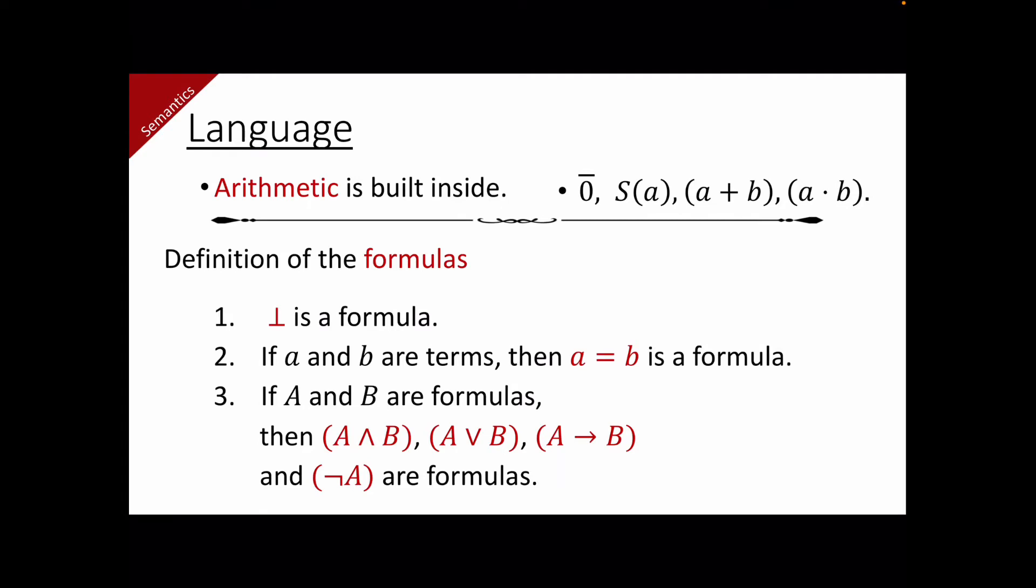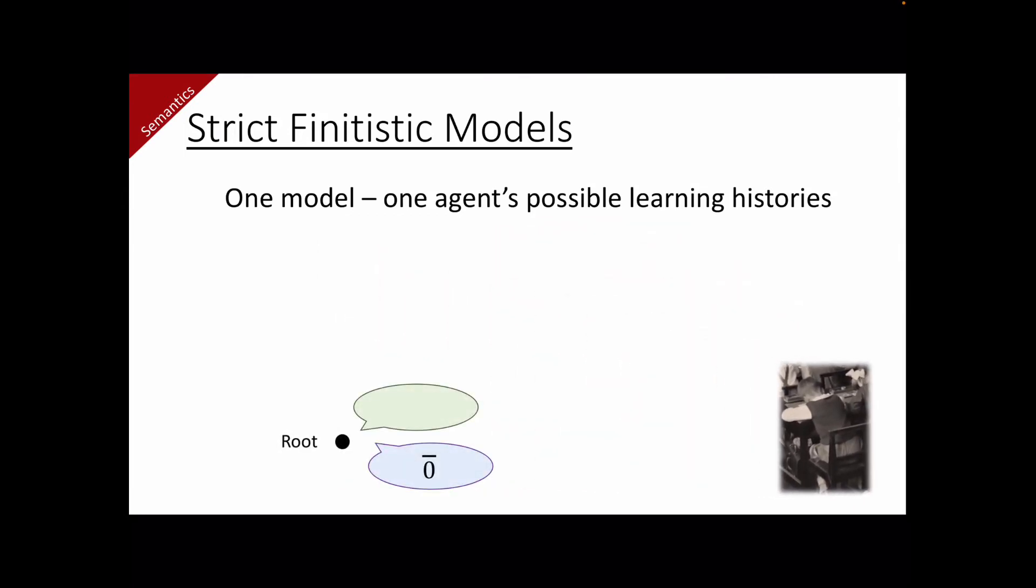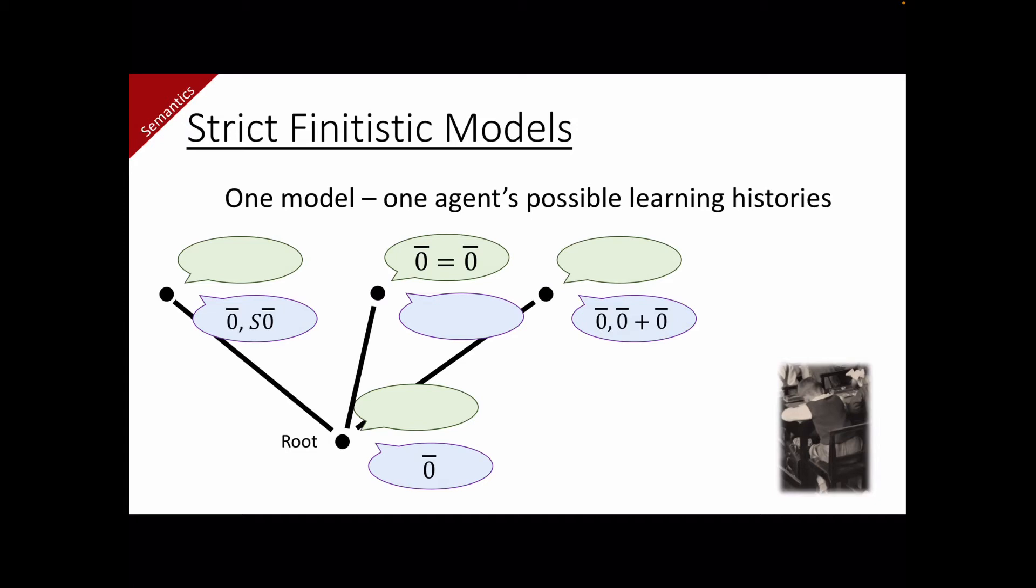Semantics is a Kripke style semantics. And we use tree-like structures to model agents' possible learning histories. The rules for forming a model are as follows. Each node has two bags. One is for the expressions available at that stage. The other is for the formulas that are true at that stage. Each model starts with the root node with 0 as an expression available, and nothing else. Above each node, we list up all possible developments. But learning is done one by one, from the easiest to the hardest, so that if the agent learns a new expression, they do not learn a new equation. If the agent discovers a true mathematical fact, they do not acquire a new expression. And the model expands this way, indefinitely.